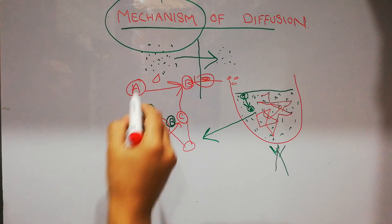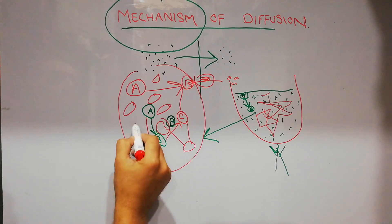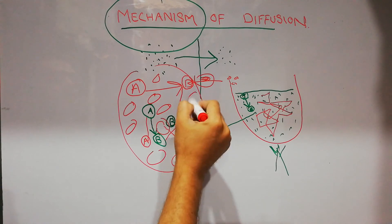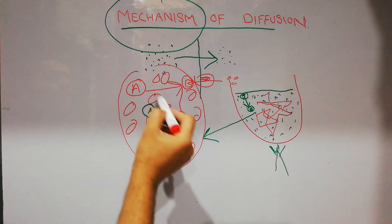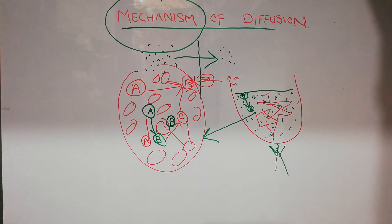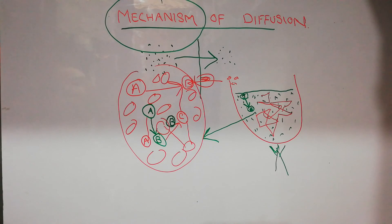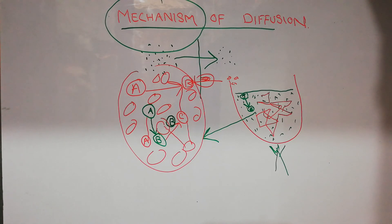Because the concentration of molecules is high on one side, the chances of a molecule on that side crossing to the side with low concentration are very high. So they cross the membrane without any energy, and that's how transport of ions or molecules across the cell membrane occurs. I hope you have understood the basic mechanism of passive transport or diffusion.